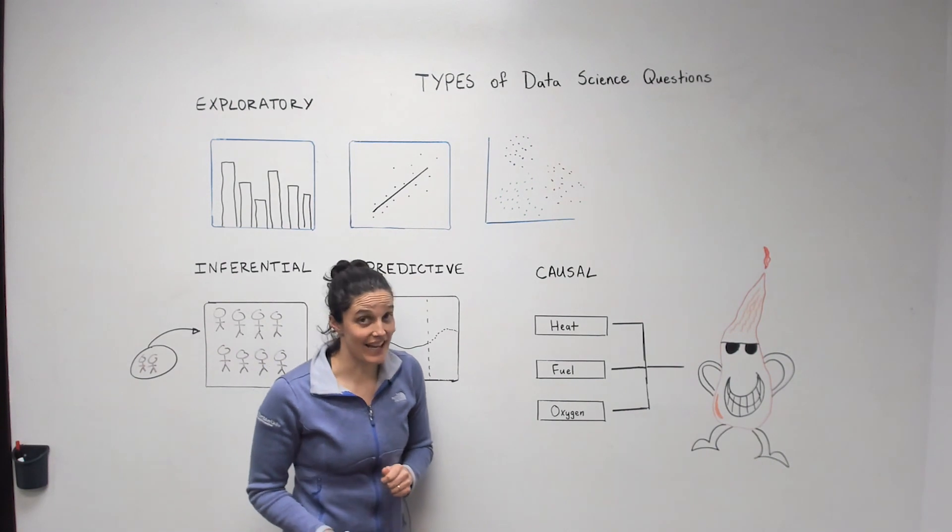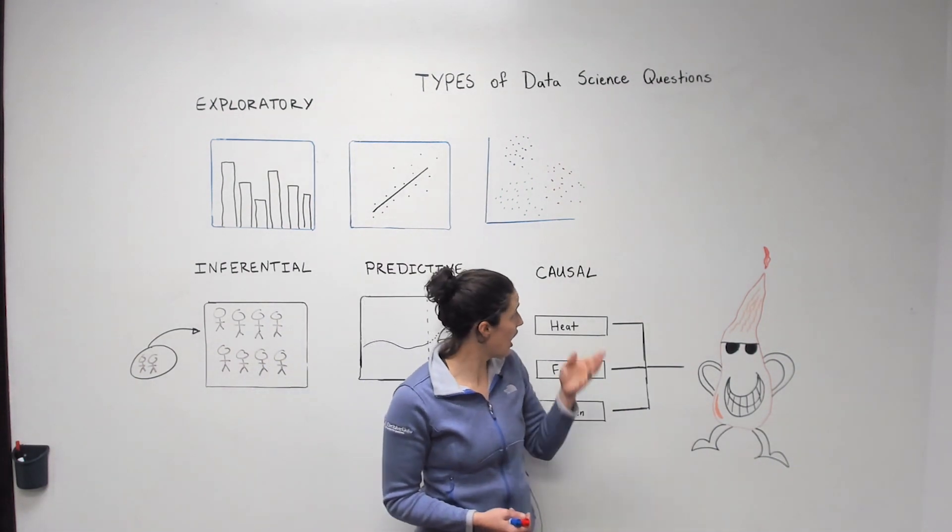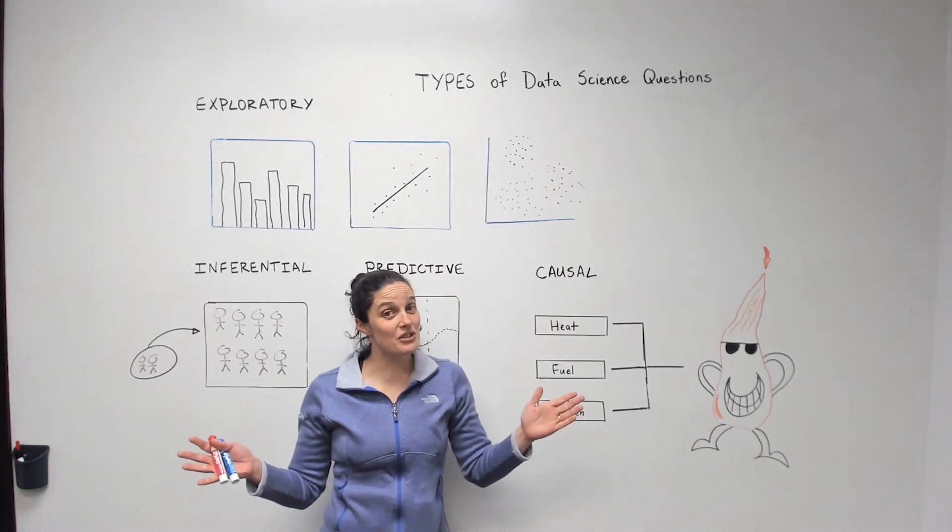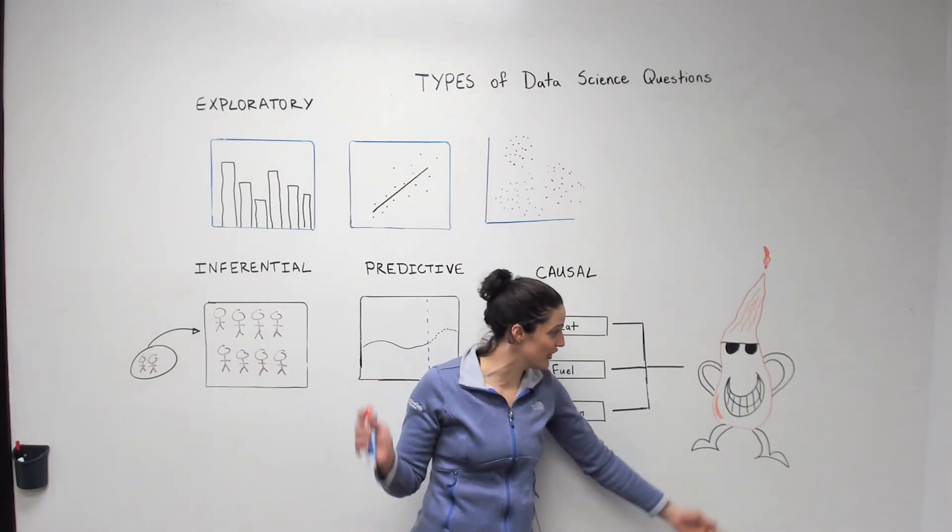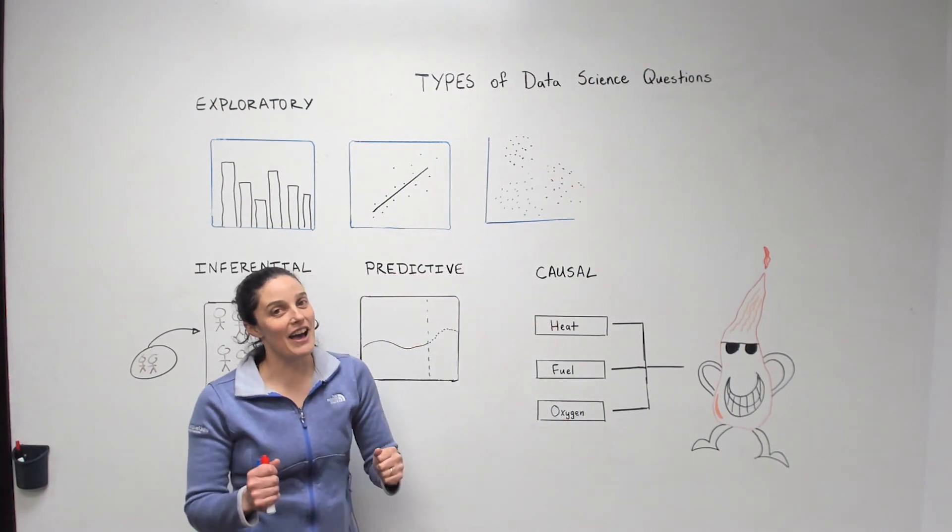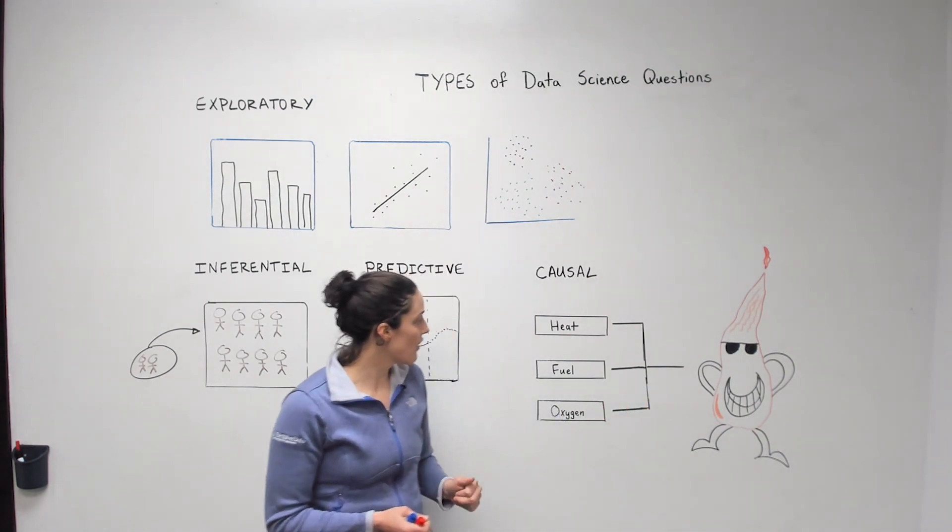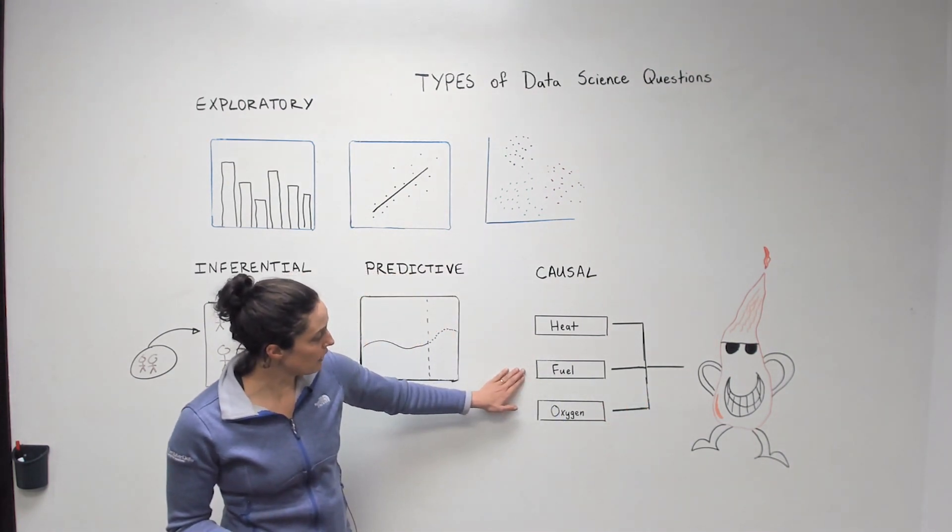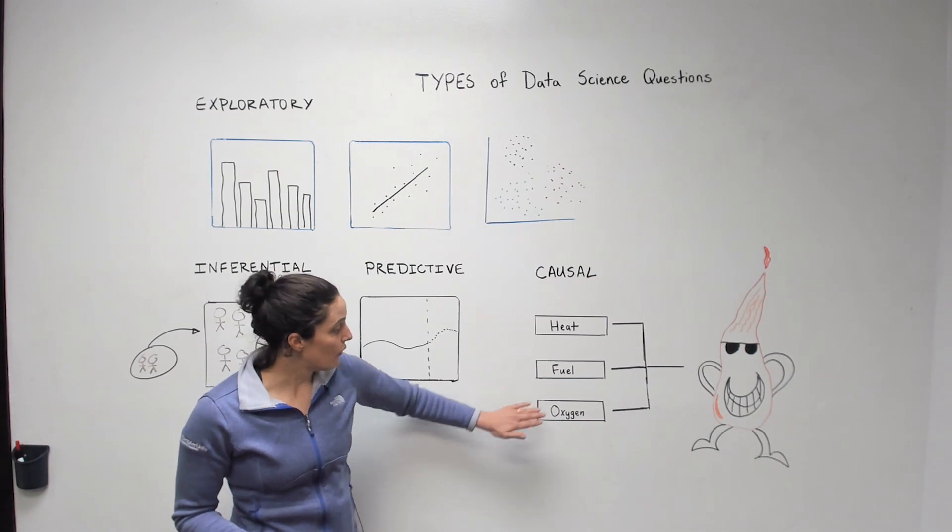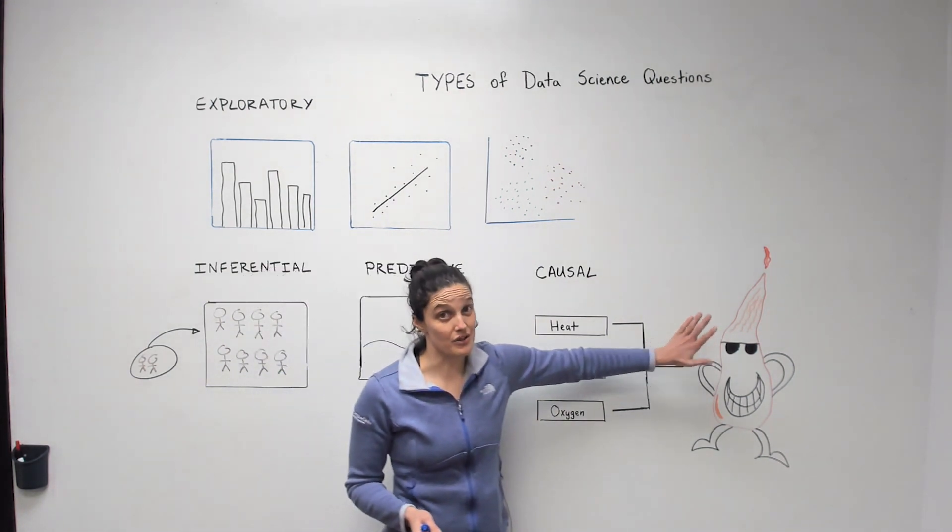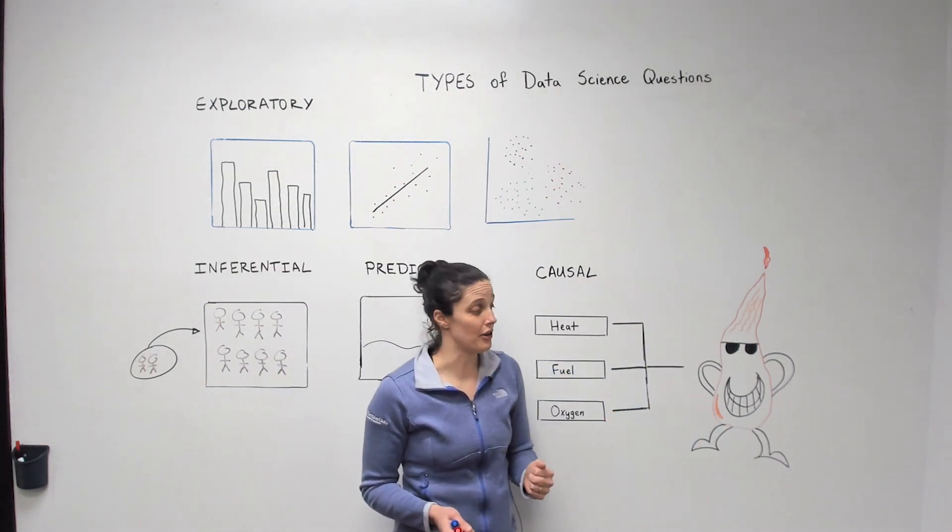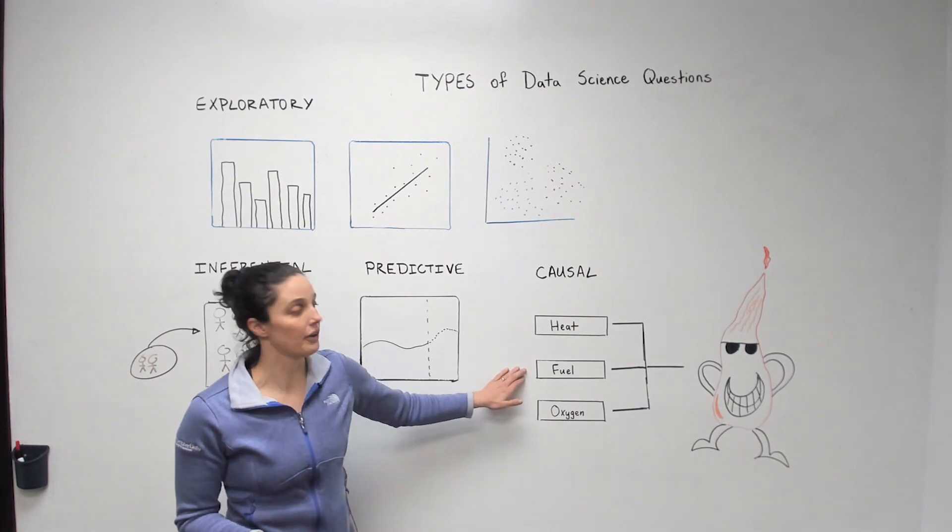So that takes us to causal, and I would like to introduce you to fire dude. Fire dude is the effect of something. What is it the effect of? We know that it's the effect of heat, fuel, and oxygen. If we take away fuel, fire dude's gone, but we really like fire dude so we'll keep fuel here for now.